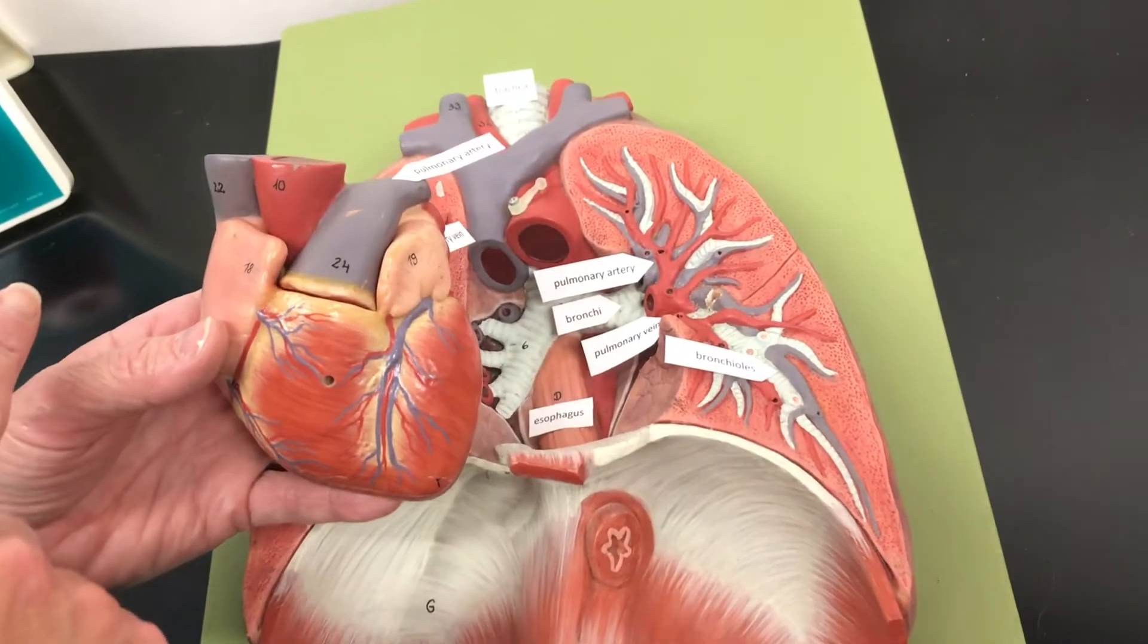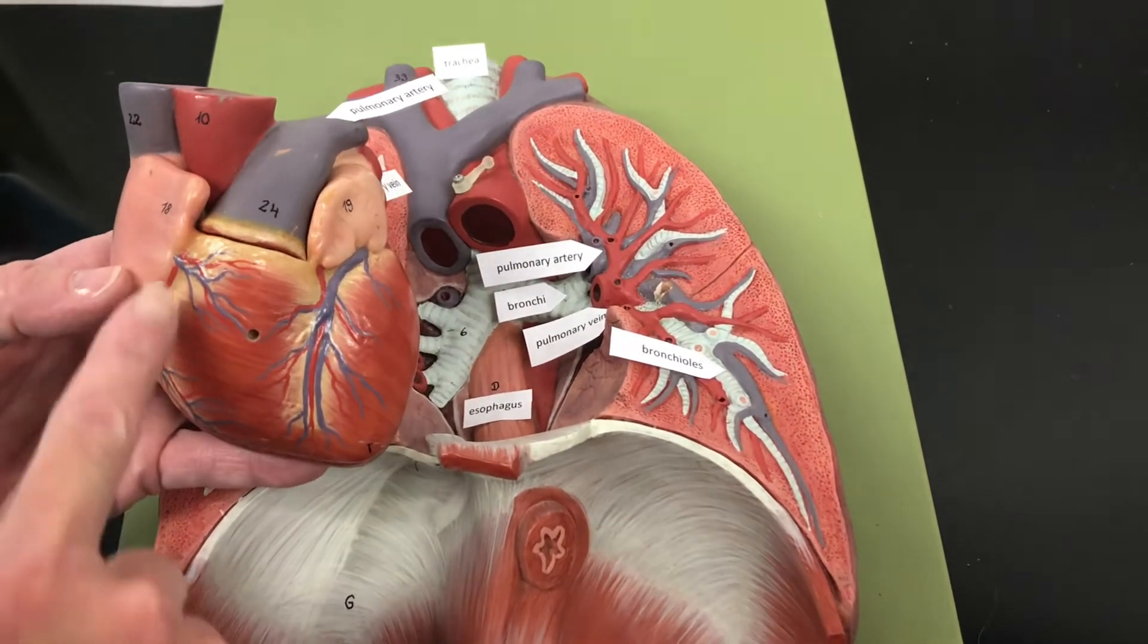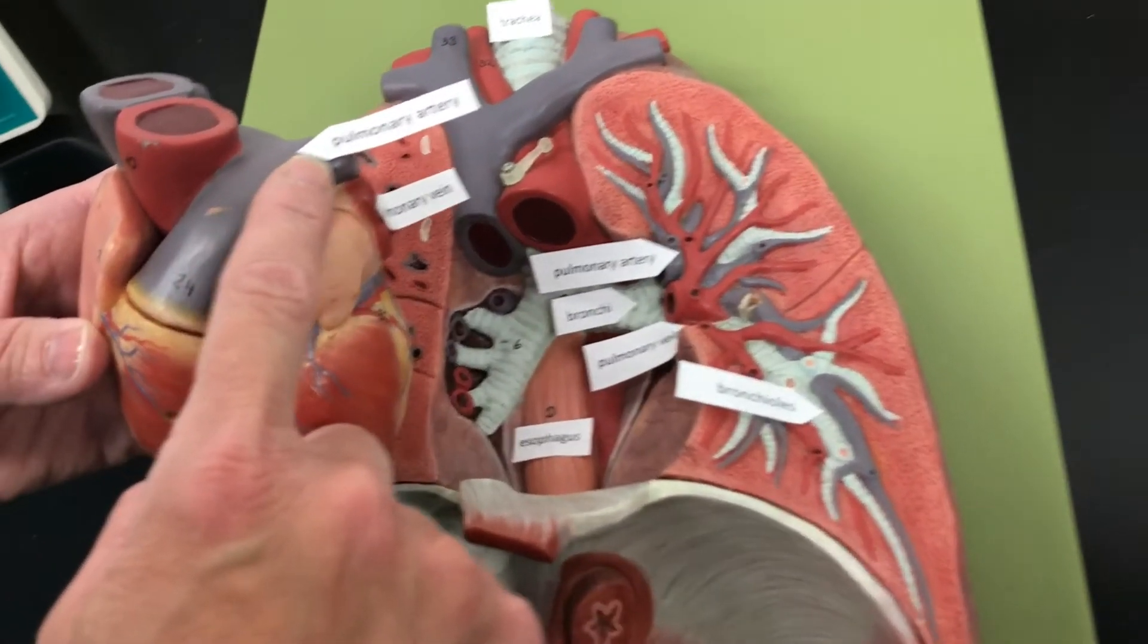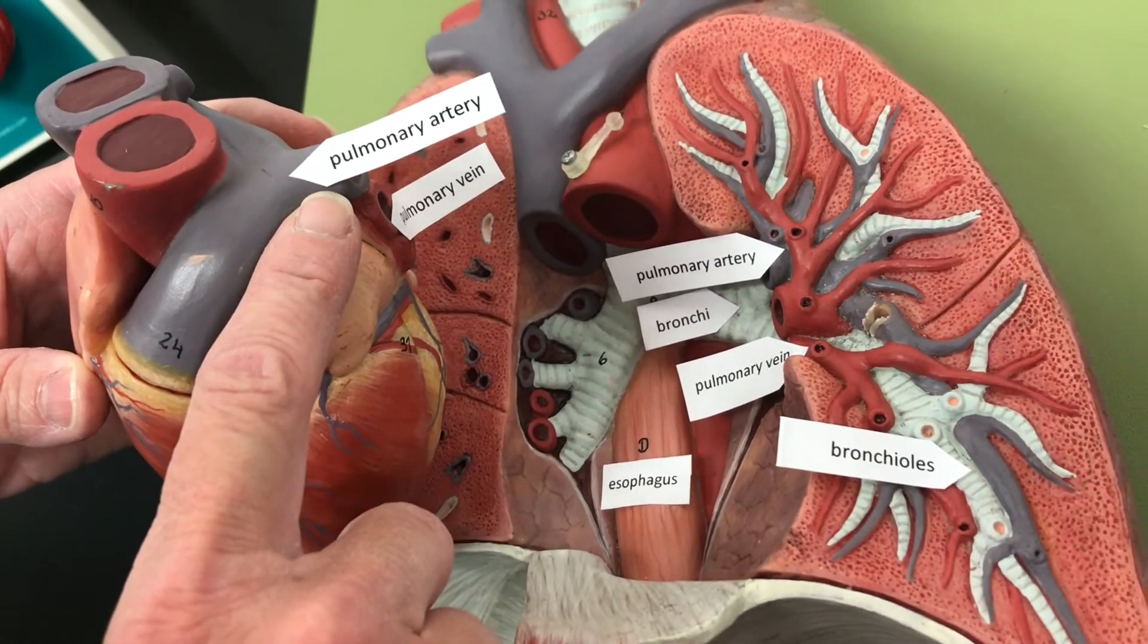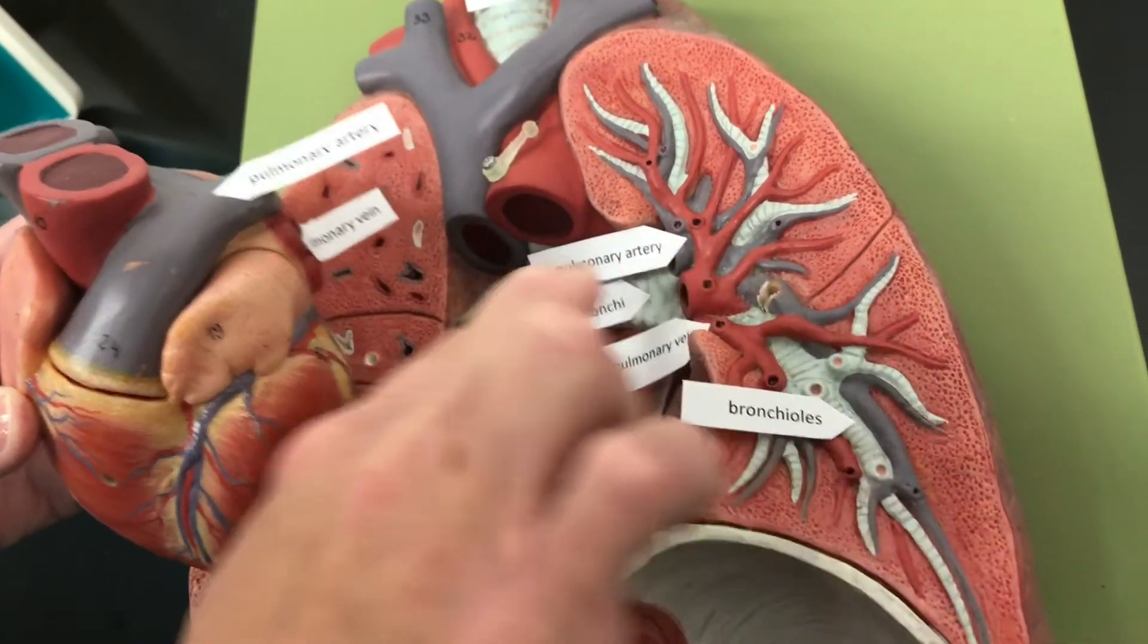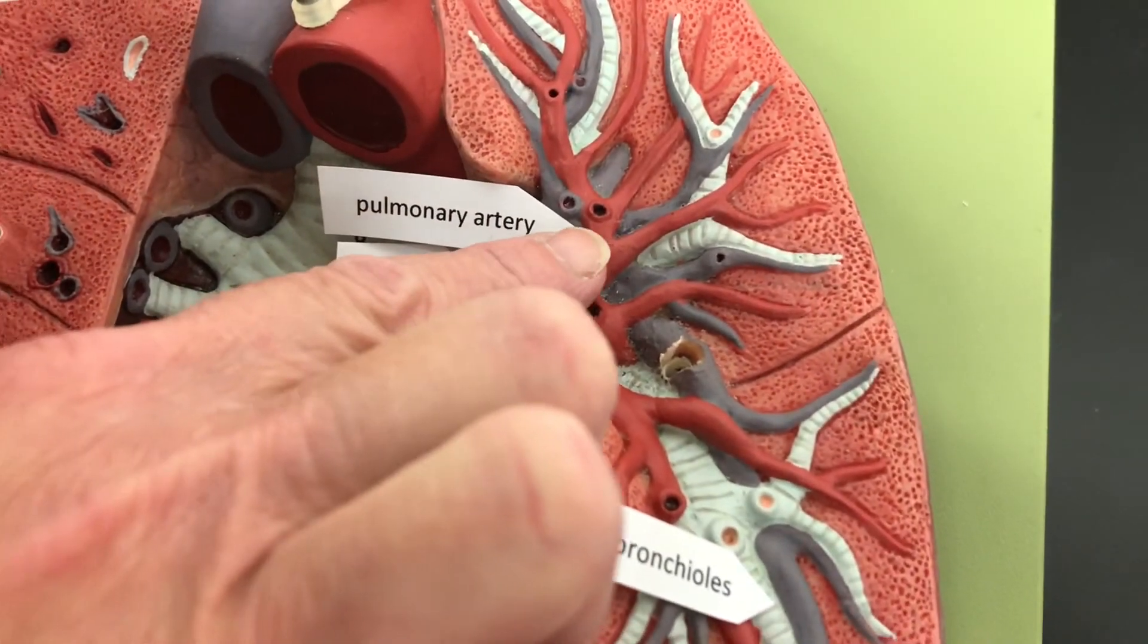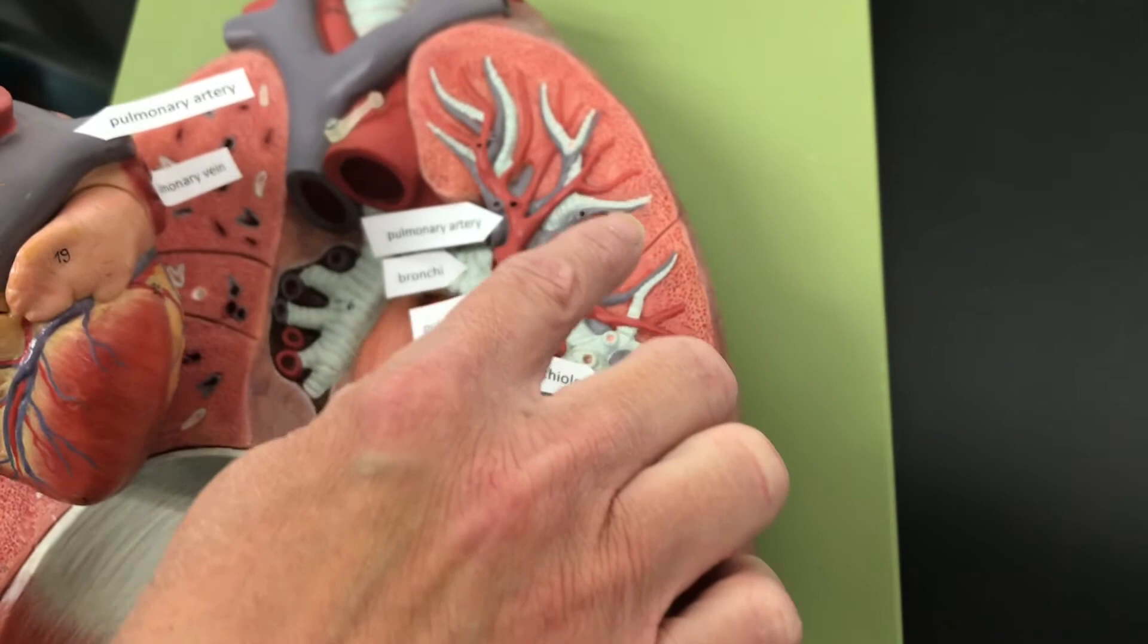Deoxygenated blood comes back to the heart from the body through the vena cava, and then it gets pumped to the lungs. So here's the pulmonary trunk, and then it's going to go to the lungs through the pulmonary artery. So pulmonary tells us it's going to the lungs. Artery tells us it's going away from the heart. So here is the pulmonary artery, and then it's going to go into the capillary beds and it's going to do gas exchange.